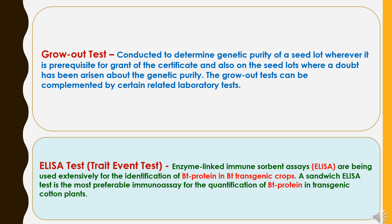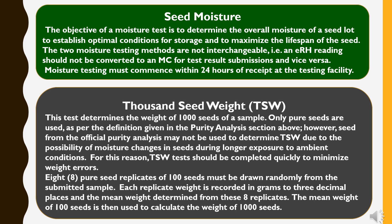There is also the trait event test or ELISA test — enzyme-linked immunosorbent assay — which is used extensively for the identification of Bt protein in Bt transgenic crops. A sandwich ELISA test is the most preferable immunoassay for the quantification of Bt protein in transgenic cotton plants. Now seed moisture testing. The objective of the moisture test is to determine the overall moisture of a seed lot, to establish optimal conditions for storage and to maximize the lifespan of seed. The two moisture testing methods are not interchangeable; ERH readings should not be converted to moisture content for test results submission and vice versa. Moisture testing must commence within 24 hours of receipt at the testing facility.